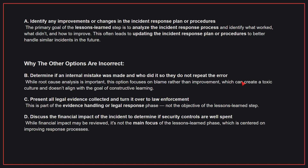Why the other options are incorrect: B. Determine if an internal mistake was made and who did it so they do not repeat the error — while root cause analysis is important, this option focuses on blame rather than improvement, which can create a toxic culture and doesn't align with the goal of constructive learning. C. Present all legal evidence collected and turn it over to law enforcement — this is part of the evidence handling or legal response phase, not the objective of the lessons learned step. D. Discuss the financial impact of the incident to determine if security controls are well spent — while financial impact may be reviewed, it is not the main focus of the lessons learned phase, which is centered on improving response processes. Therefore, the correct answer is A.